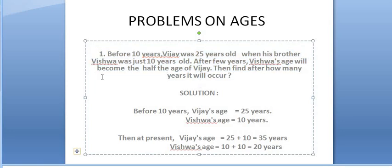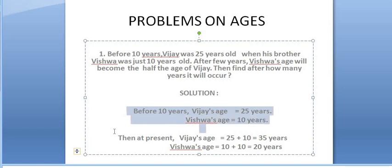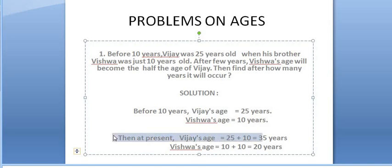The question is: if Vijay is 25 years old and Vishwa is 10 years old — but in the present time, Vijay was 25 years old, so that is now 35 years old, and Vishwa is 20 years old.